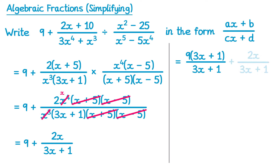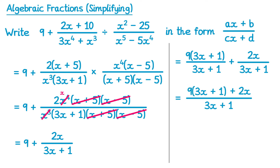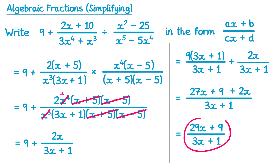The second fraction is already over 3x plus 1. Now we can combine these into one fraction since they have the same denominator. So on the top we have 9 lots of 3x plus 1, and then plus 2x. We can expand out this bracket: 9 lots of 3x plus 1 is the same as 27x plus 9, and then we can simplify the top. We have like terms 27x and 2x; if you add 27x and 2x you get 29x, and then there's plus 9. You can now see that this answer matches the form given in the question. The value of a is 29, b is 9, c is 3, and d is 1.